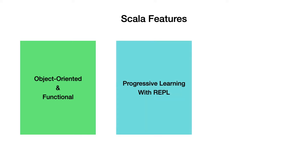Scala offers REPL mode, which we will cover later in this course. This mode offers the ability to try out Scala programs on the command line. With this approach, you can learn and get feedback faster. This short feedback loop cycle is so valuable because you do not need to commit to boilerplate code and project structure to validate your ideas. Most Scala engineers first try out smaller ideas before making them part of a bigger project lifecycle.